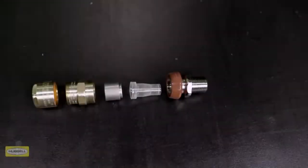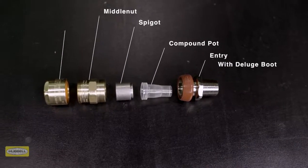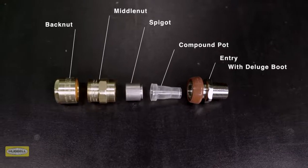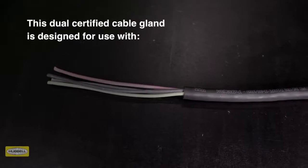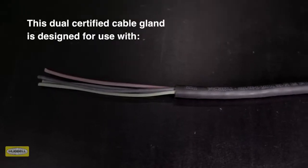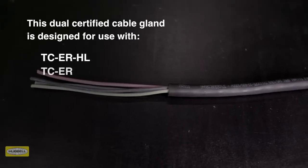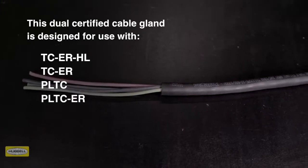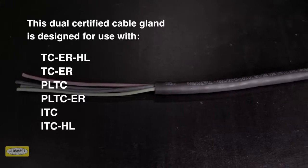The 710 cable gland consists of five key components: entry with deluge boot, compound pot, spigot, middle nut with patented tightening guide, and back nut. This dual certified cable gland is suitable for use with the following cable types: TC-ER, HL, TC-ER, PLTC, PLTC-ER, ITC, ITC-HL, and ITC-ER.